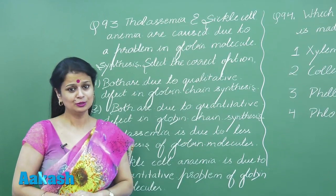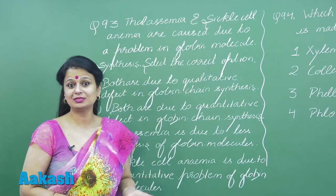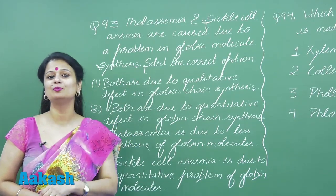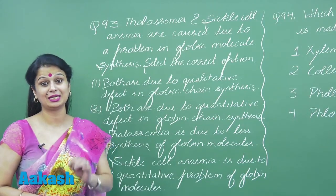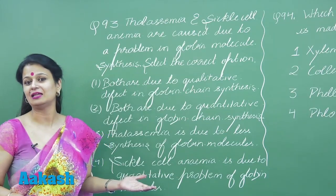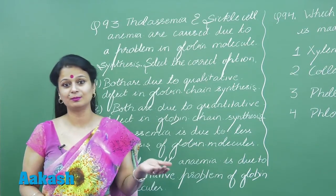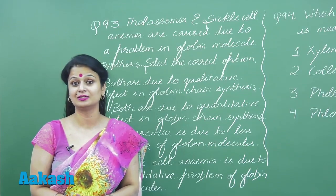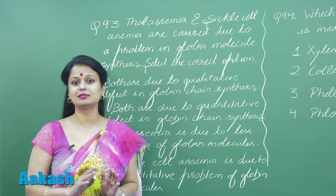That makes sickle cell anemia a qualitative problem in the globin. But what about thalassemia? In thalassemia, the number of globin chains changes, so it is a quantitative problem. For example, in alpha thalassemia, the number of alpha globin chains decreases, and beta globin chains are present in relatively more amount.